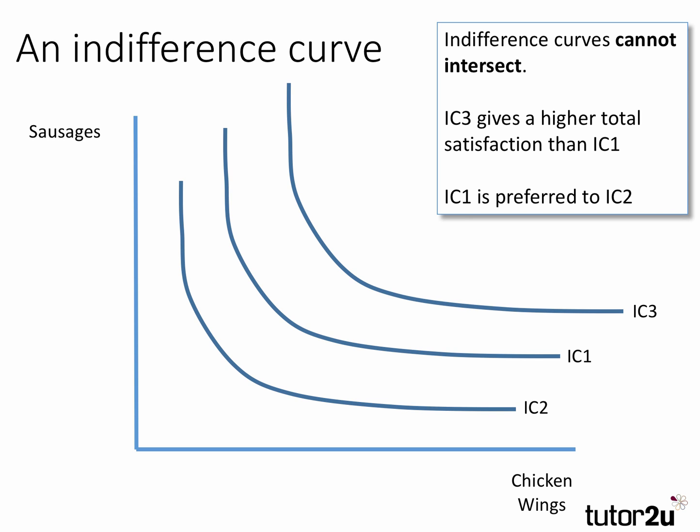Now a crucial point: indifference curves in conventional theory cannot intersect. Indifference curve IC3 is further out from the origin — that gives greater satisfaction than IC1 — but IC1 is preferred to IC2. So perhaps a simple rule of thumb is that the consumer is looking to try and reach the furthest possible indifference curve from the origin, assuming that consuming sausages and chicken wings gives you positive satisfaction or utility.